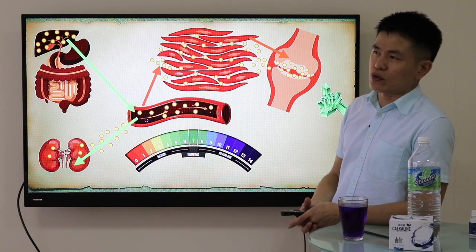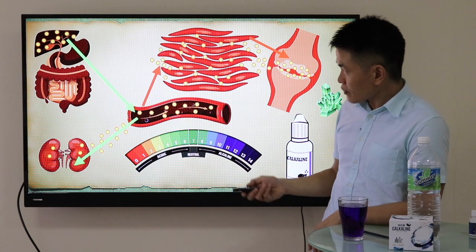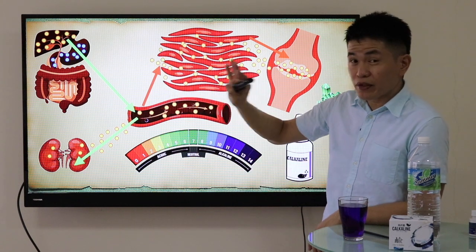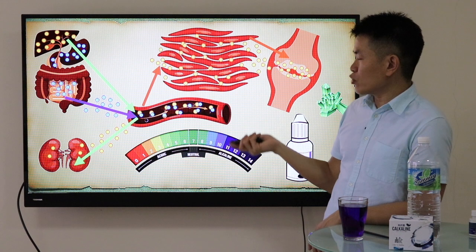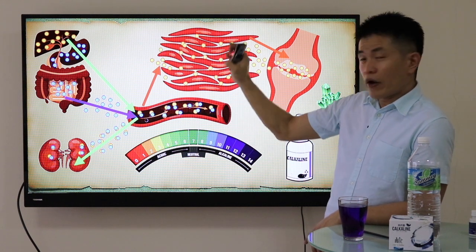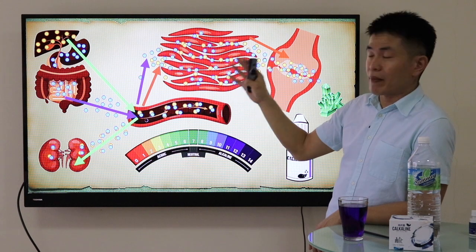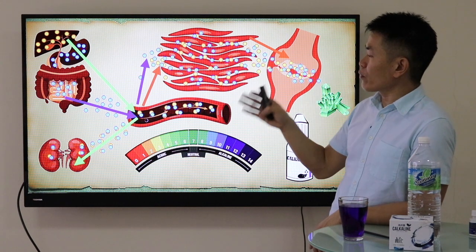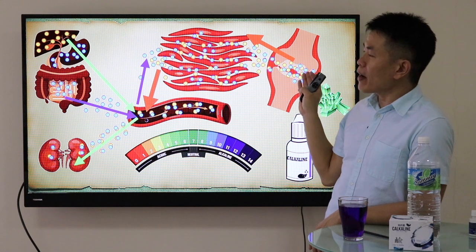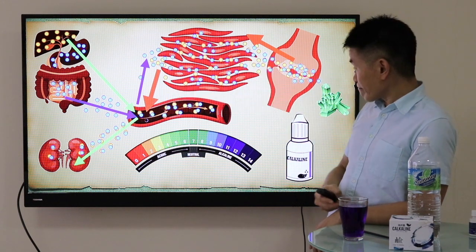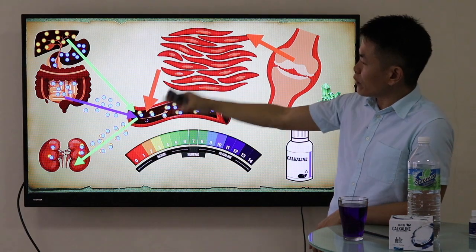When you drink alkaline water, it is absorbed from your stomach into the bloodstream through the small intestine. It neutralizes uric acid in the bloodstream, binding to it and bringing it out through your urine. It also seeps into the muscle tissues and reaches the joints — reversing the direction of uric acid accumulation. Previously uric acid was moving inward; now with alkaline water, the process is reversed and the uric acid comes back out.